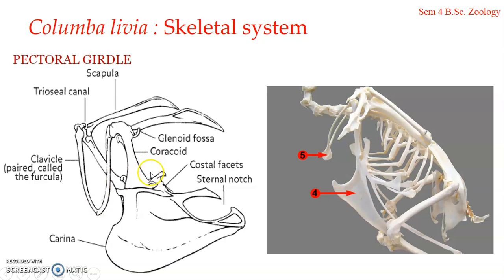The scapula is almost sabre-shaped — a long, flattened, slightly curved sabre-shaped bone lying above the thoracic ribs, anterior to the ribs and parallel to the vertebral column. The expanded anterior end of the scapula is firmly united with the coracoid by a ligament.